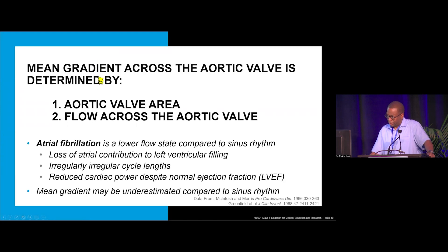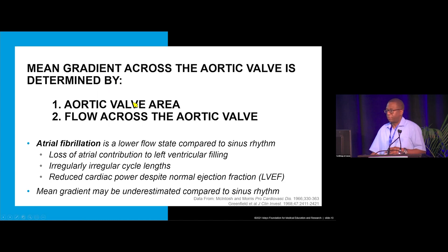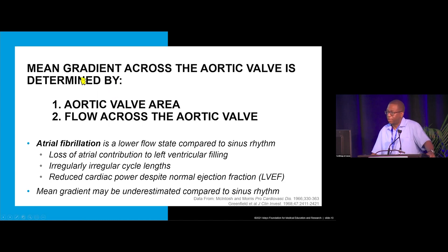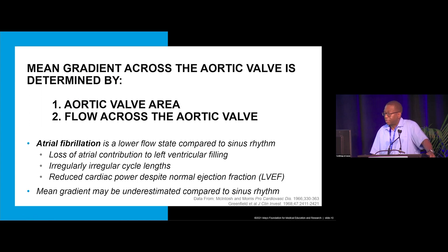The mean gradient across the aortic valve is determined by the aortic valve area: the smaller the valve area, the higher the mean gradient. But for that gradient to rise appropriately in proportion to the decrease in valve area, you need normal flow across the aortic valve.